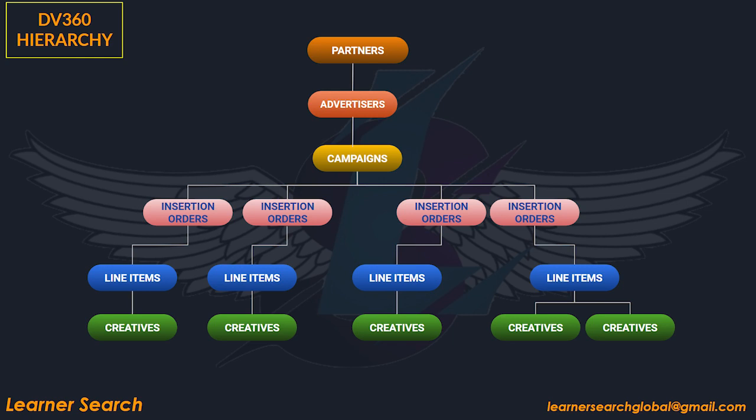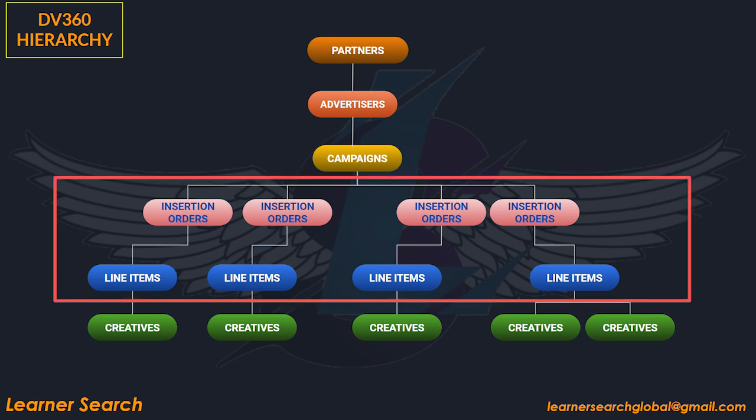Similarly, in DV360 hierarchy, at the top levels it helps to look at various access, permission, linking, and other features. Only IO and line item level takes control of the actual budget in DV360.